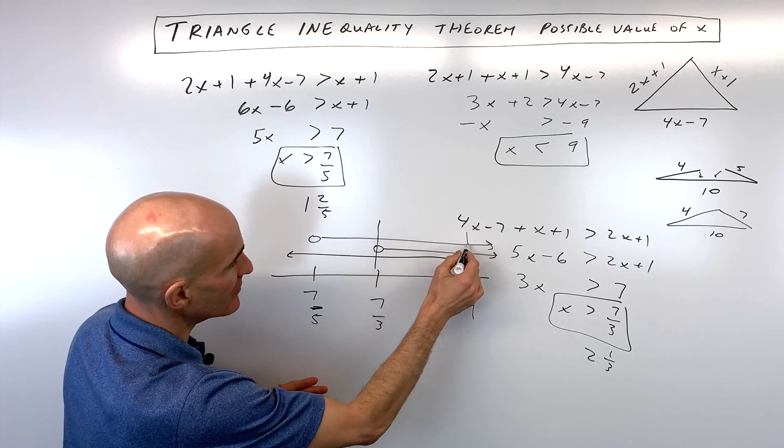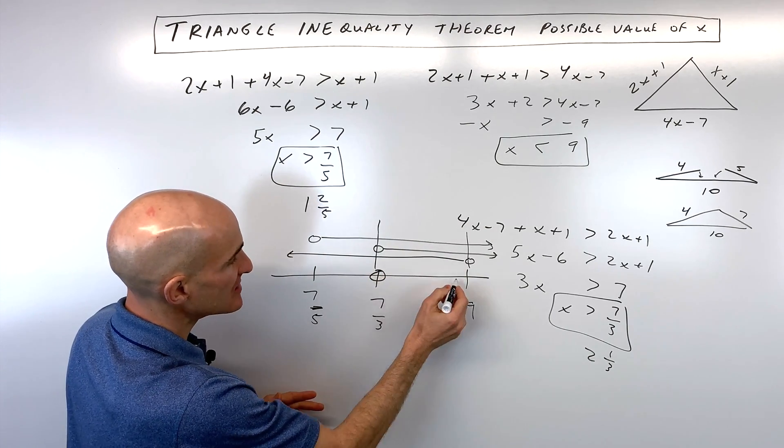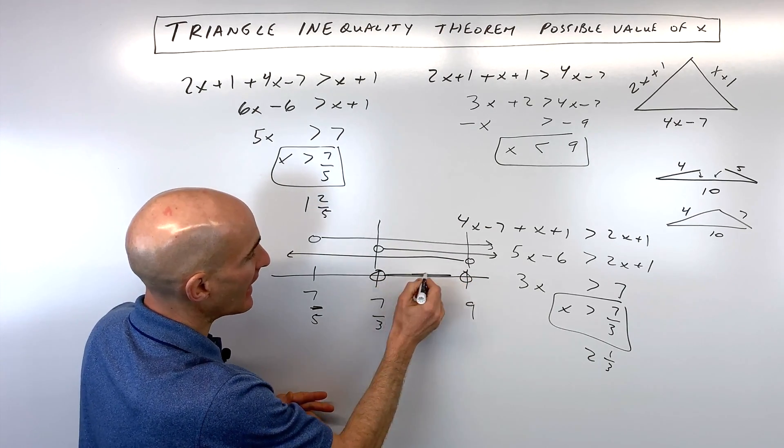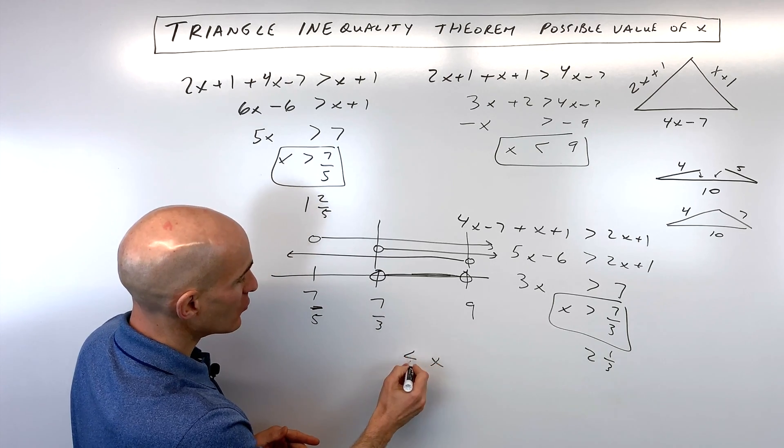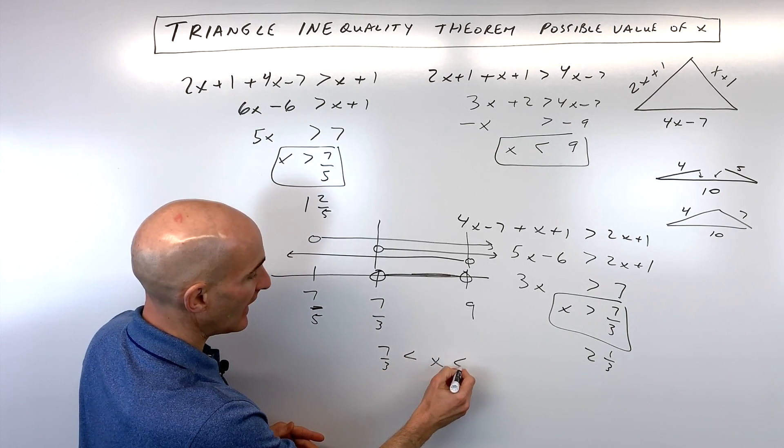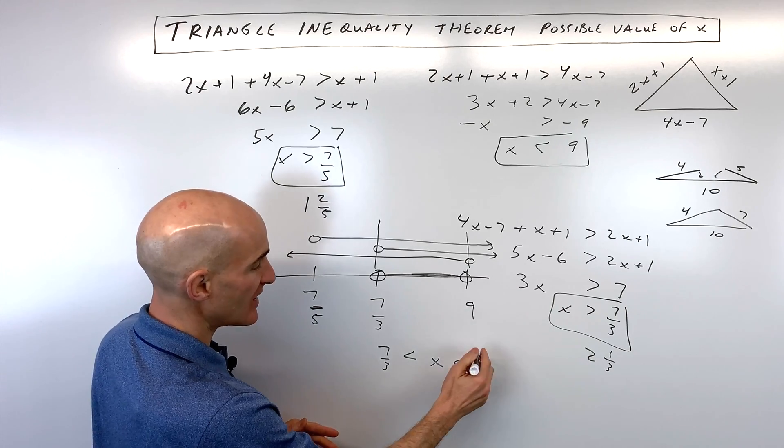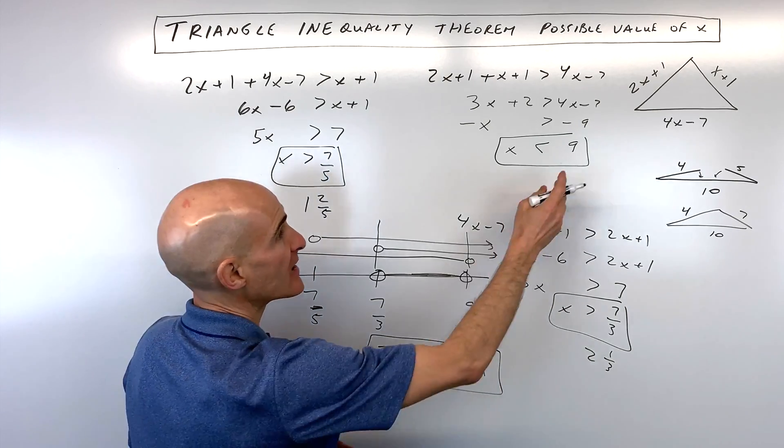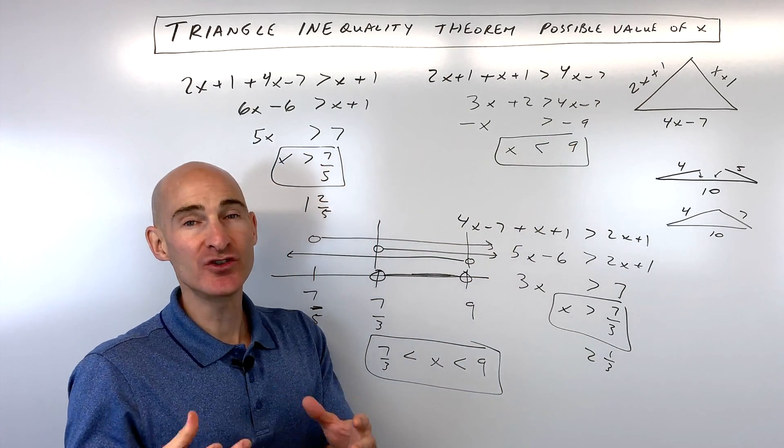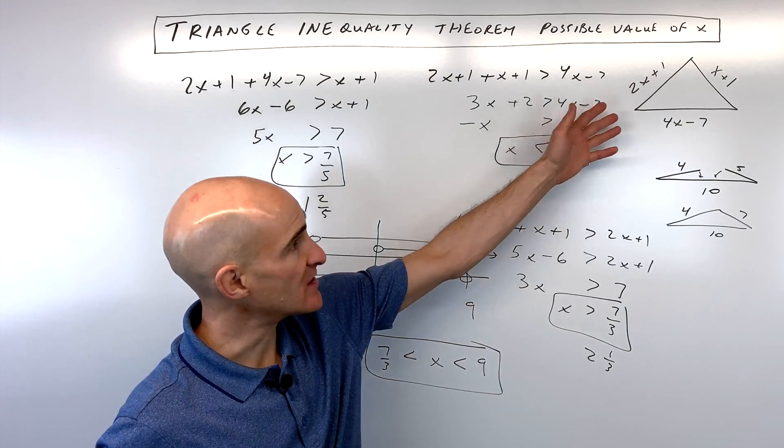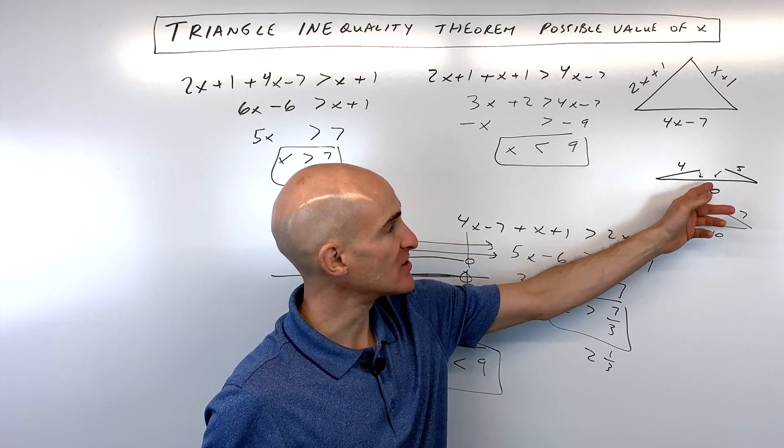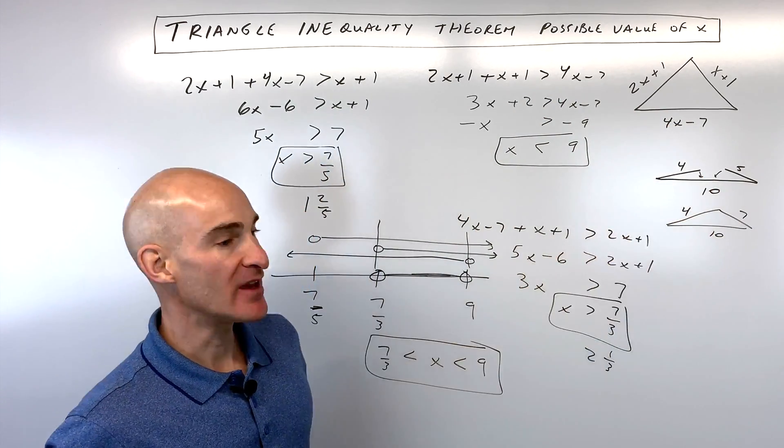So you can see they're overlapping right here in this region in between seven-thirds and nine, so as long as x is greater than seven-thirds and at the same time less than nine, basically sandwiched in between seven-thirds and nine, then this is going to actually be a triangle that you can draw, meaning that any two sides will add to more than the third side. We won't have a situation here where there's a gap.